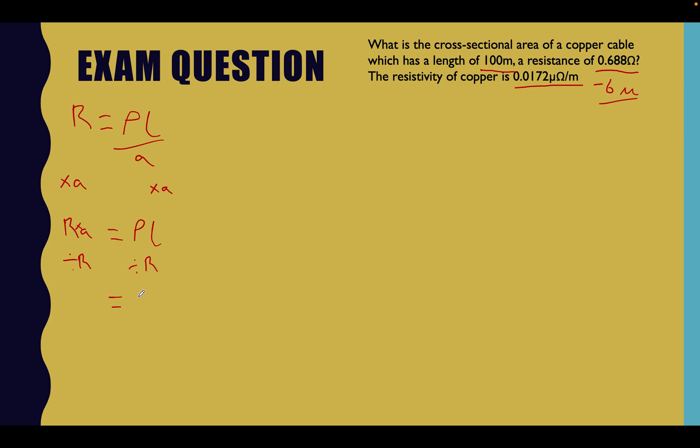And then what do we end up with? We end up with A on its own over here, which is what we want. And then we've got the resistivity multiplied by the length over the resistance. So we've transposed it. We've got A as a subject. Perfect.